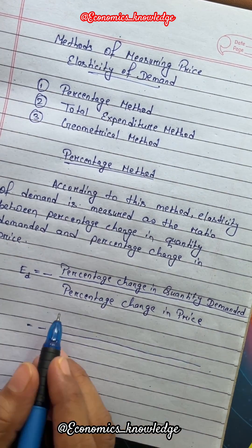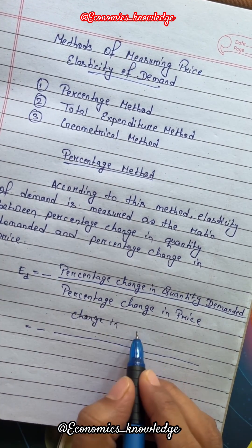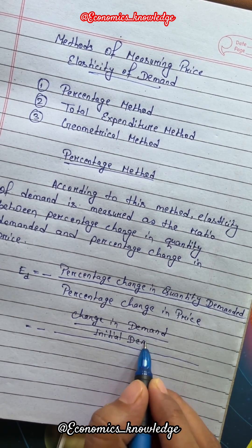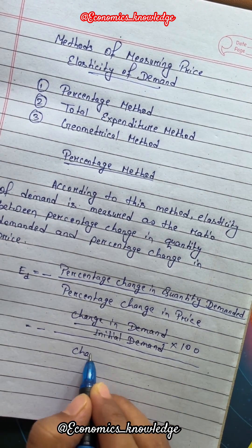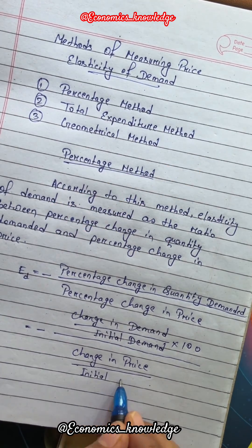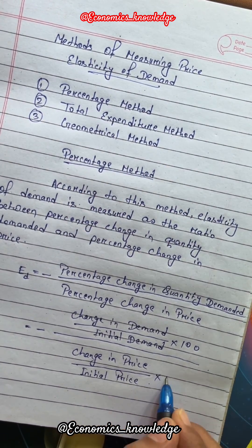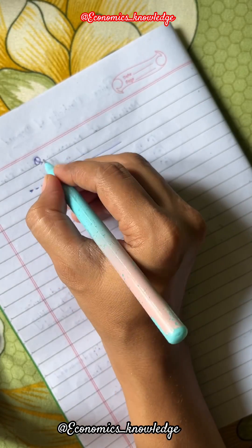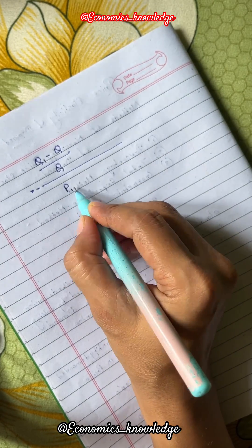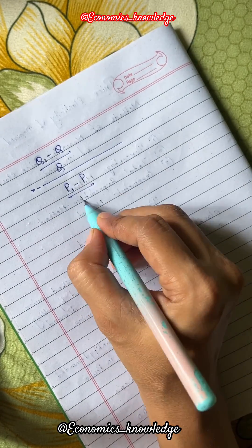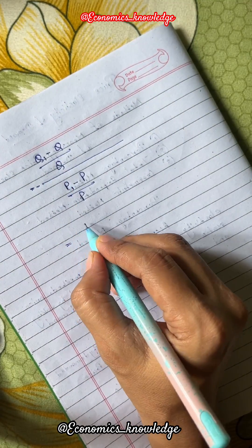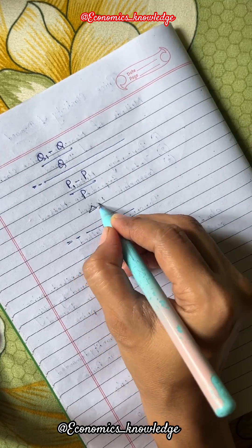Percentage change in quantity demanded can be written as change in demand upon initial demand into hundred, and percentage change in price can be written as change in price upon initial price into hundred. Here, the hundreds cancel out. Change in demand can be written as Q1 minus Q, initial demand as Q, change in price as P1 minus P, and initial price as P.